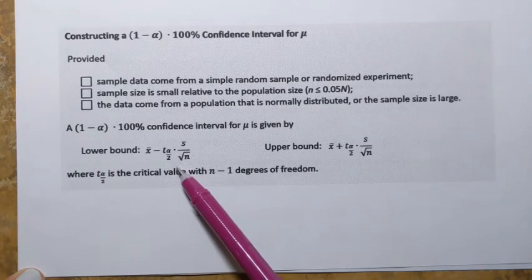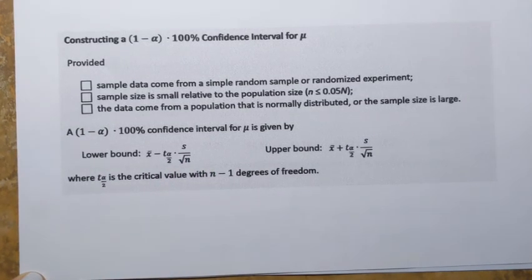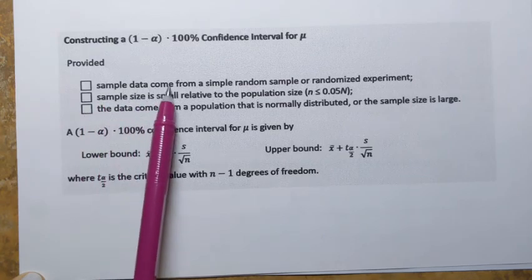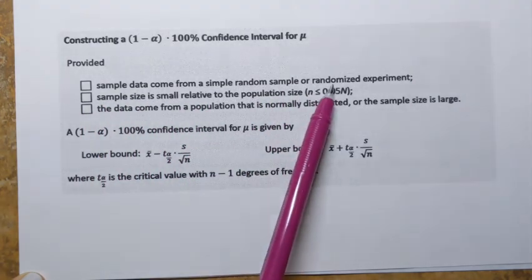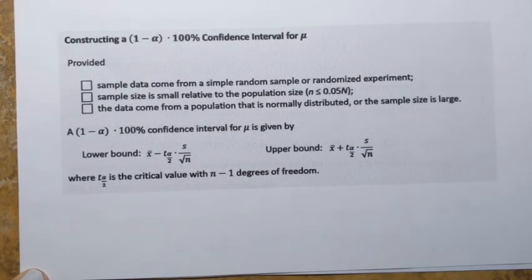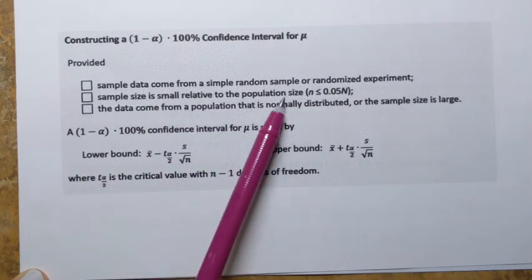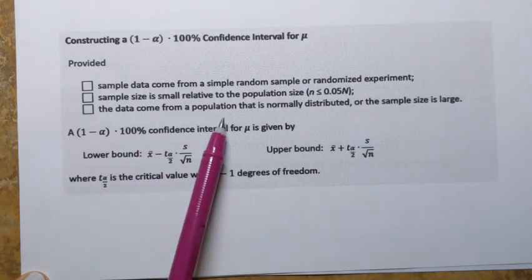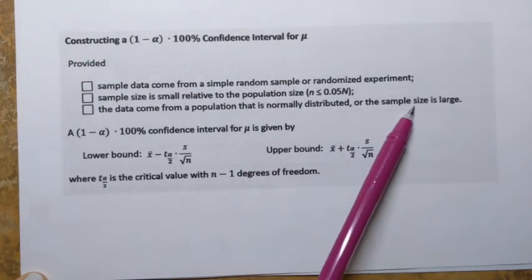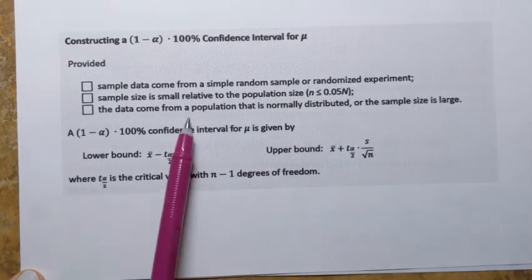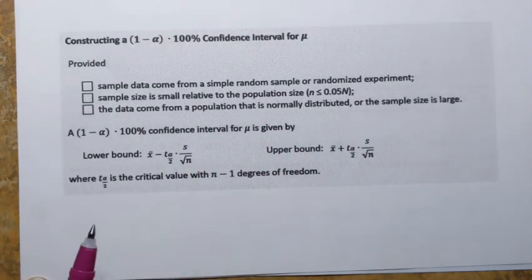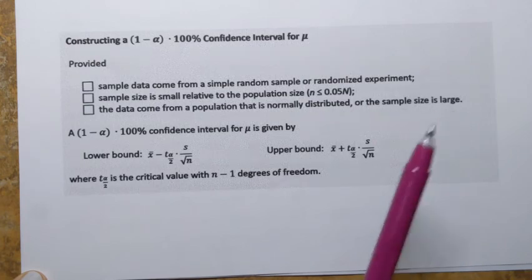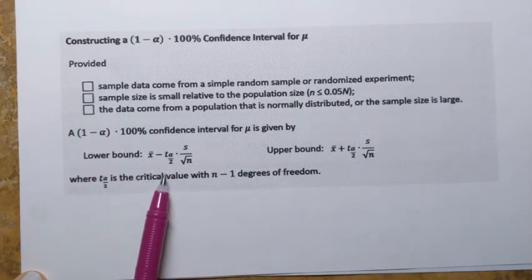In order to use Student's t-distribution to obtain the confidence interval, three conditions must be satisfied. First, sample data must come from a simple random sample or randomized experiment. Second, sample size must be small relative to population size — less than or equal to five percent of the population. Third, data must come from a normally distributed population, or the sample size must be large. The cutoff for large sample size is usually 30 individuals.